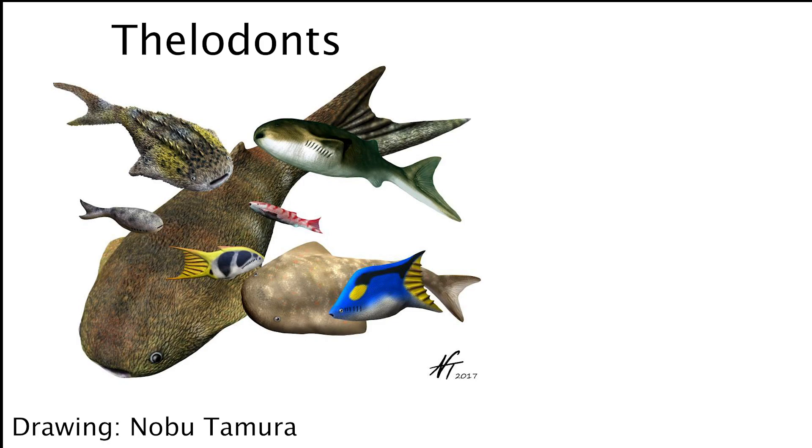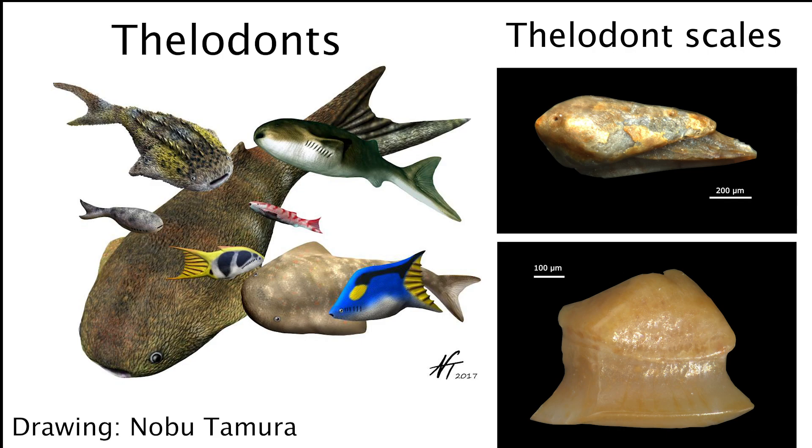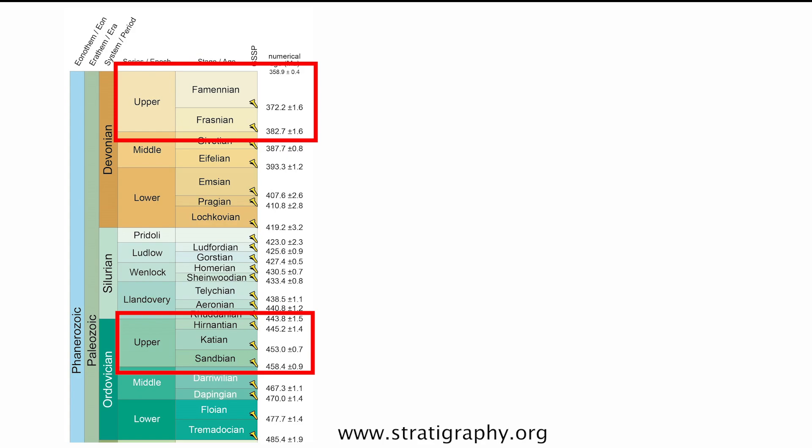Even without jaws and bones, jawless fish were quite successful and have survived until today in the form of lampreys and hagfish. The most commonly preserved remains of thelodonts are their scales. They can be found in rocks of late Ordovician to late Devonian age, around 450 to 360 million years ago.